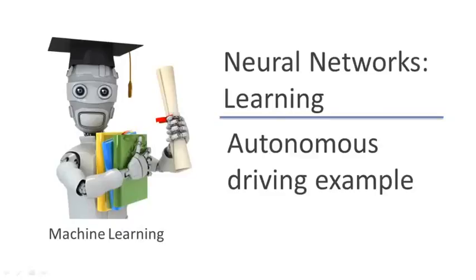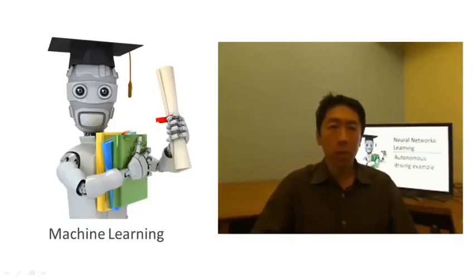In this video, I'd like to show you a fun and historically important example of neural network learning, of using a neural network for autonomous driving. That is, getting a car to learn to drive itself.